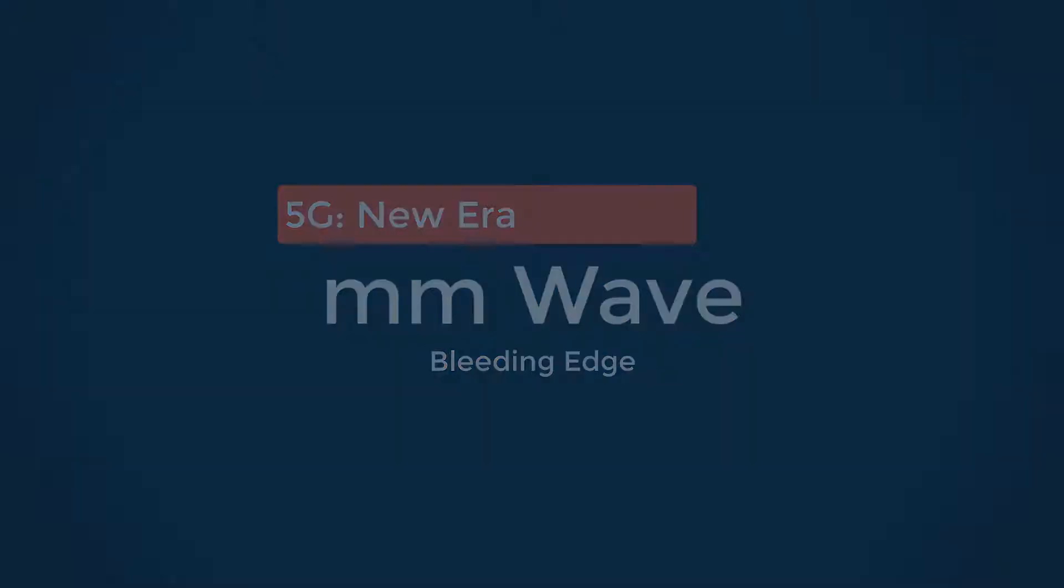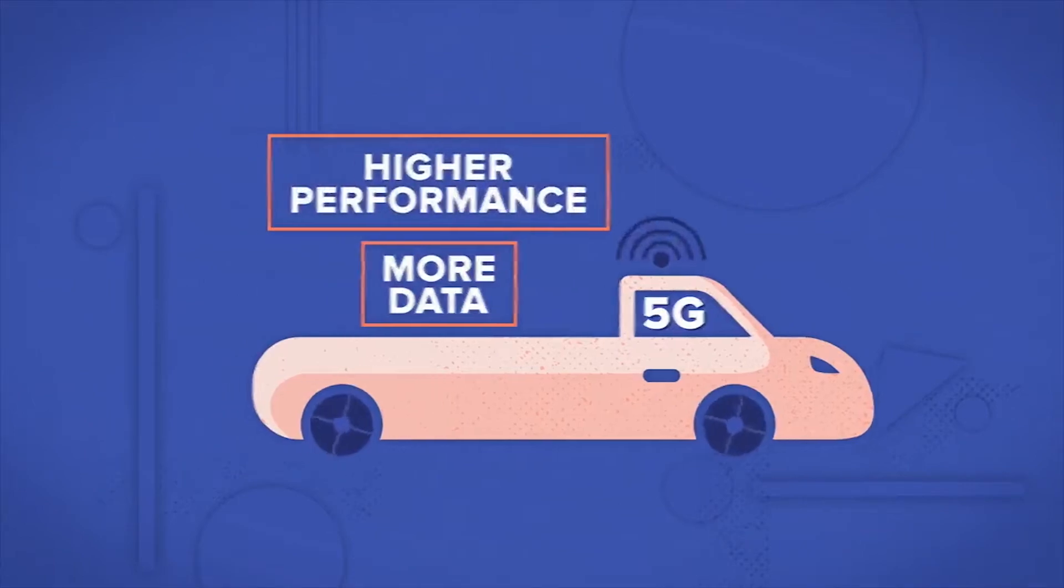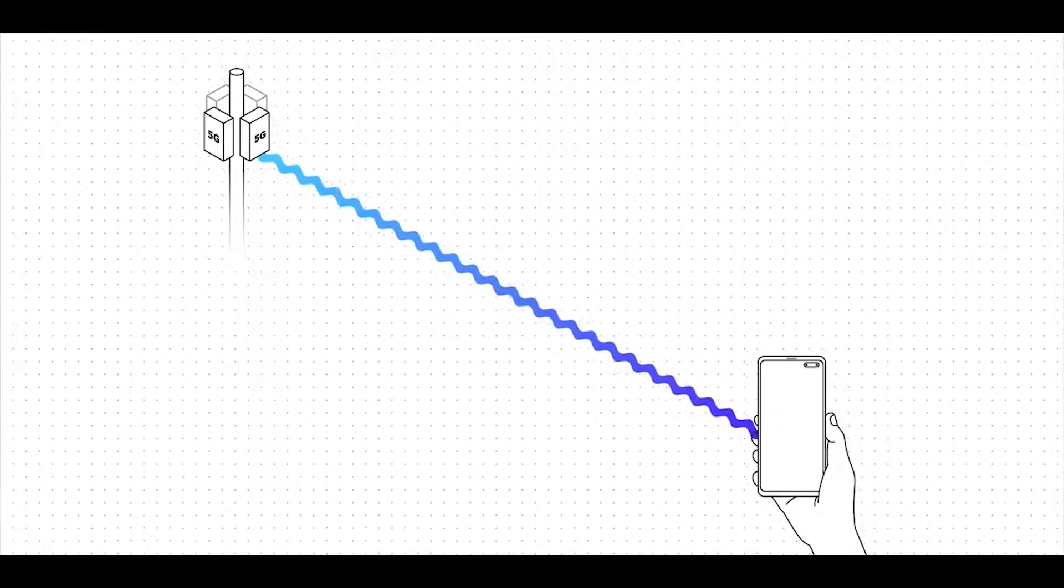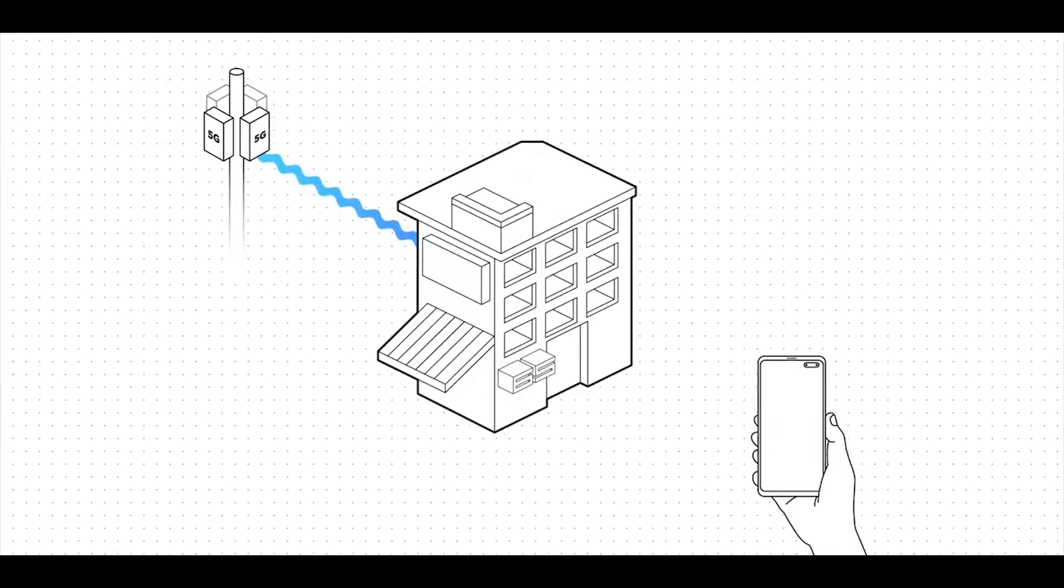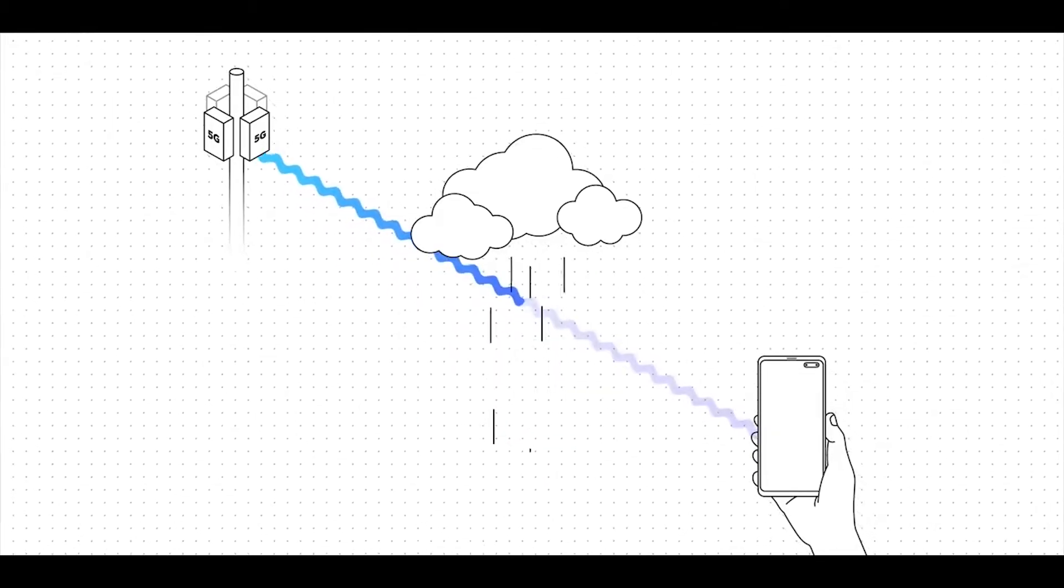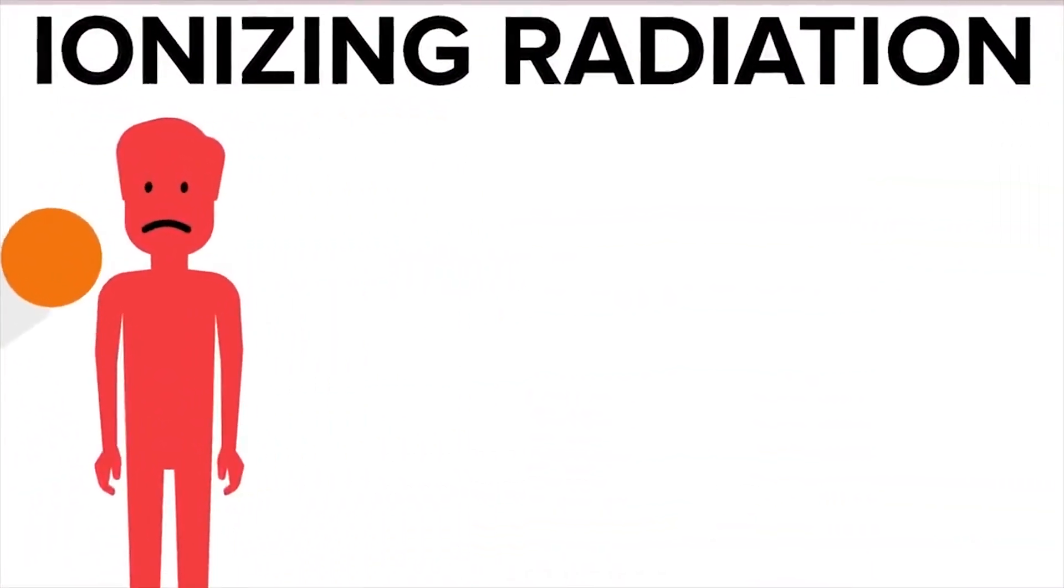This is where the millimeter wave comes into play. Millimeter waves can carry more data with higher performance but can't travel too far. Millimeter waves can be blocked by almost everything that comes into their way, even if it is your skin, which is good for people who are worried about cancer caused by radio waves.